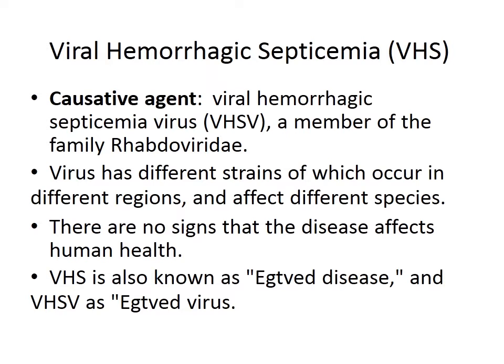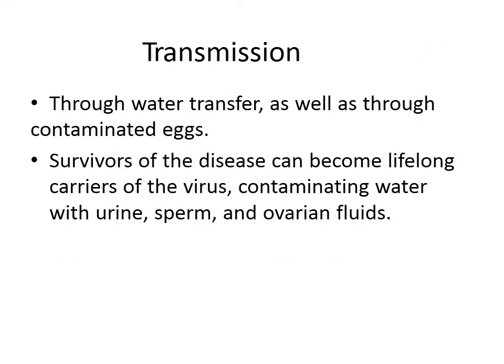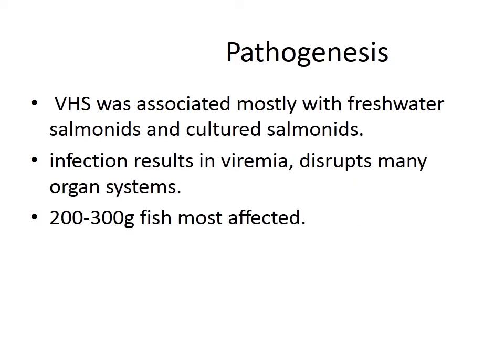VHS is also known as Egtved disease and the virus is known as Egtved virus. Transmission occurs through water and contaminated eggs. The disease reaches the pond this way, and survivors can become lifelong carriers, contaminating water with urine, sperm, and ovary. VHS is associated mostly with freshwater and cultured salmonids.